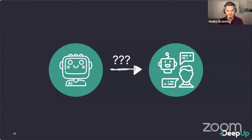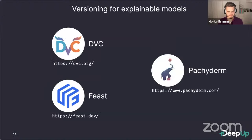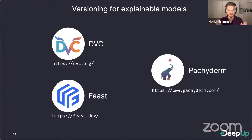Another aspect is traceability: how did our model come to this decision? For debugging we need to version not only the model itself but everything that led to its creation — which features and data were used, was bias introduced in training, were there mislabeled data or bugs in the data cleaning pipeline. To track data or features we can use tools like DVC or Feast; the final trained model can be versioned in Pachyderm or another model registry.